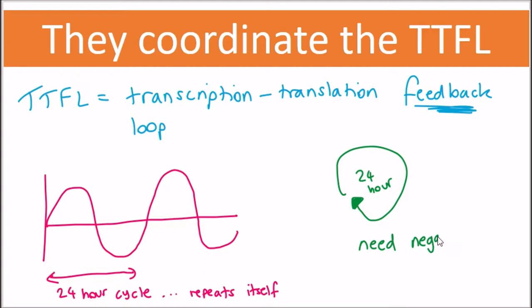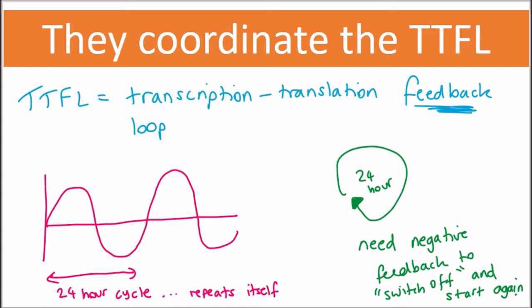It is what makes sure that the rhythm is around 24 hours and feeds back on itself. This is the negative feedback with delay that we spoke about in the last video. So how do these core components do this then?